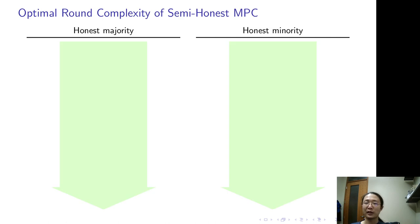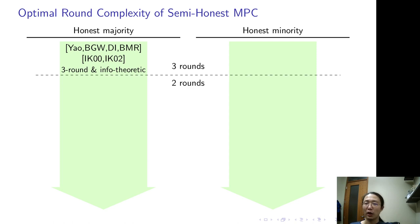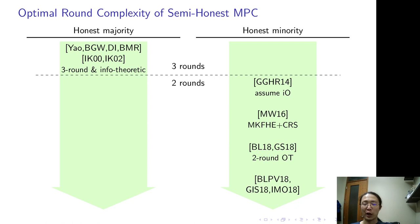The round complexity of semi-honest MPC has been studied by many prior works. By 2000, Ishai, Kushilevitz had already shown a three-round information theoretical MPC. In recent years, people managed to achieve the optimal round complexity, which is two-round. The first is by Garg et al. assuming IO, then by Mukherjee and Wichs assuming multi-key FHE. Then comes 2018, which is a fruitful year. Garg, Mukherjee, Lilin, and Garg, Srinivasan independently weakened the assumption to two-round OT, and there are many follow-up works.